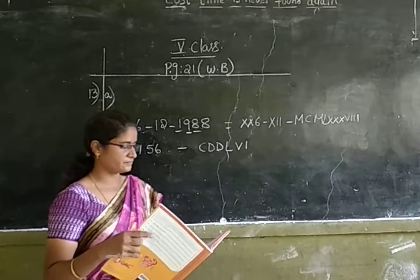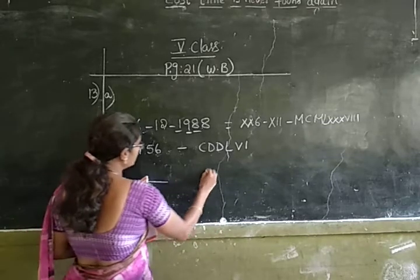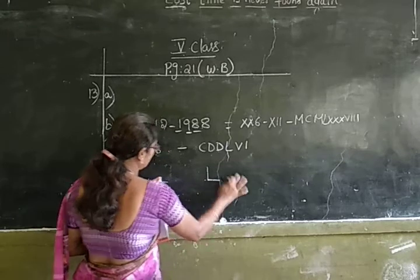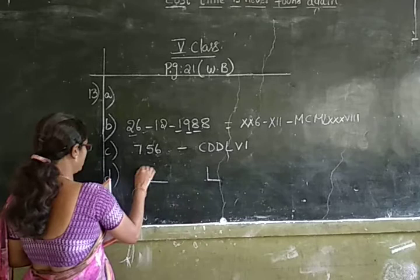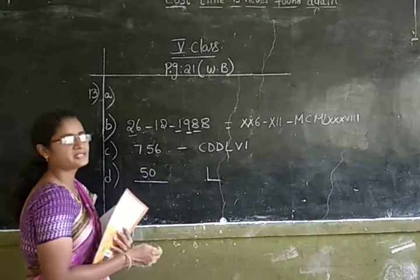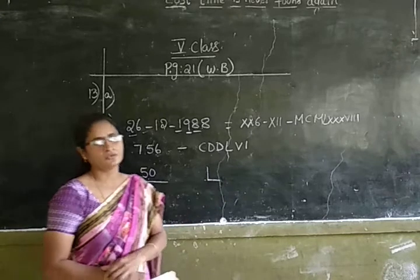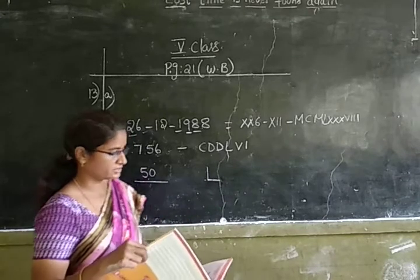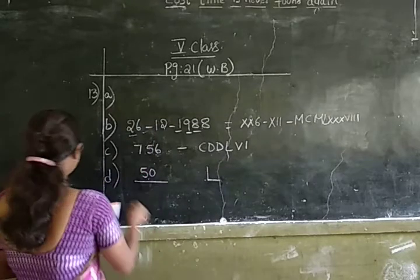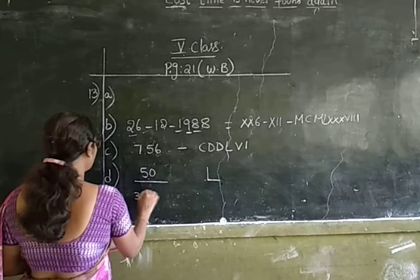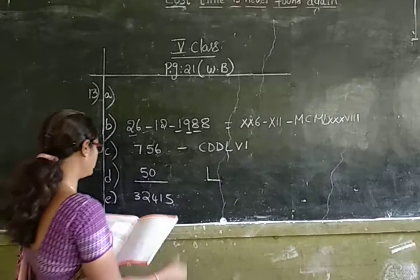Next, D question — street number. In the D question, the street number is written in Roman numeral and you have to convert it into Indo-Arabic numeral. L means 50. So we have converted the Roman numeral into Indo-Arabic numeral. Now let us see — that is the PIN code. The PIN code is given in Indo-Arabic numeral and we have to convert it into Roman numeral.